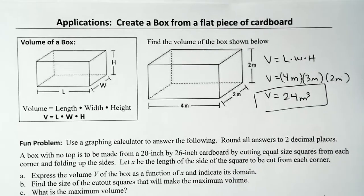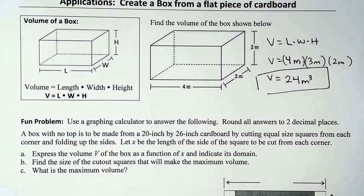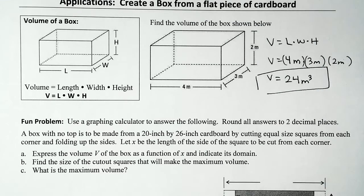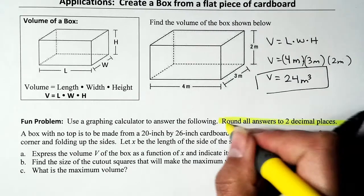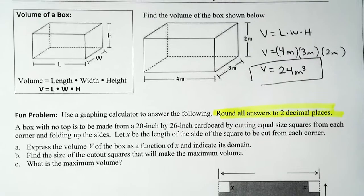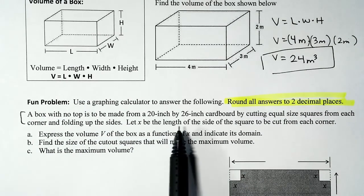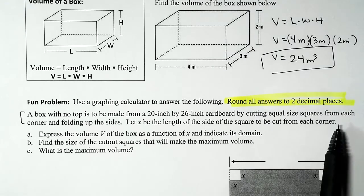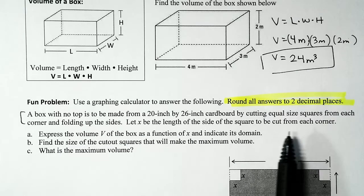This problem won't be on the test, but we're doing it to set up the fun problem. The prompt reads: use a graphing calculator to answer the following; round all answers to two decimal places. A box with no top is to be made from a 20-inch by 26-inch cardboard by cutting equal-size squares from each corner and folding up the sides. Let x be the length of the side of the square to be cut from each corner.